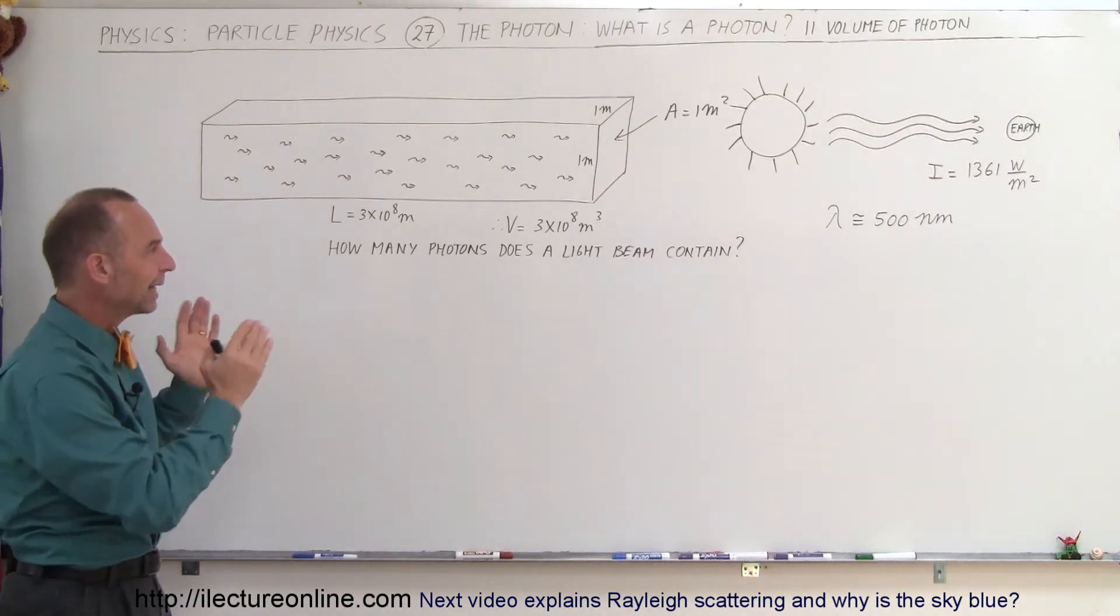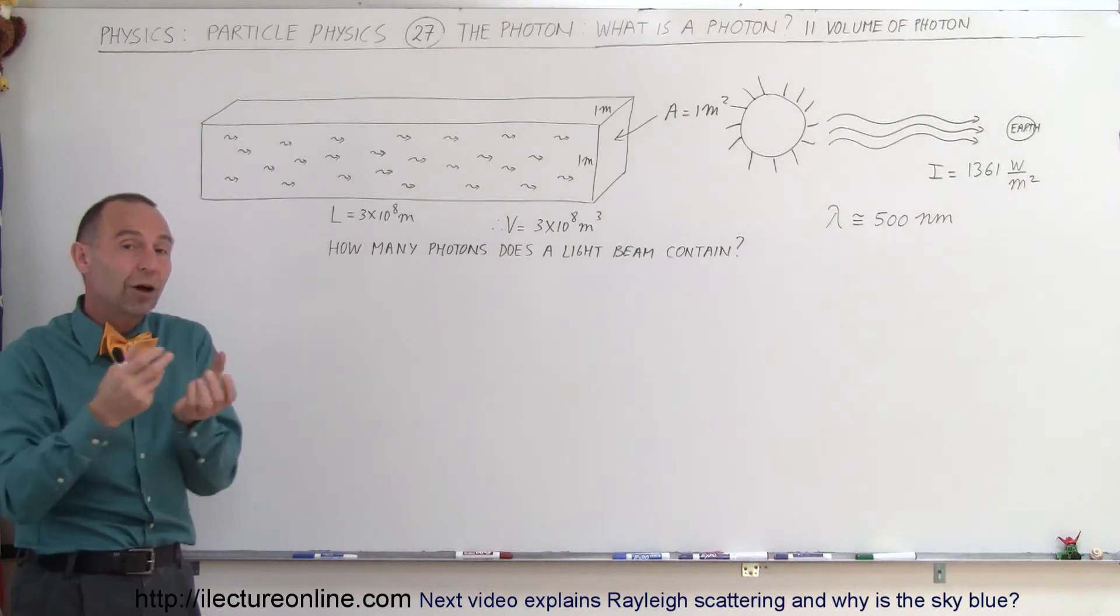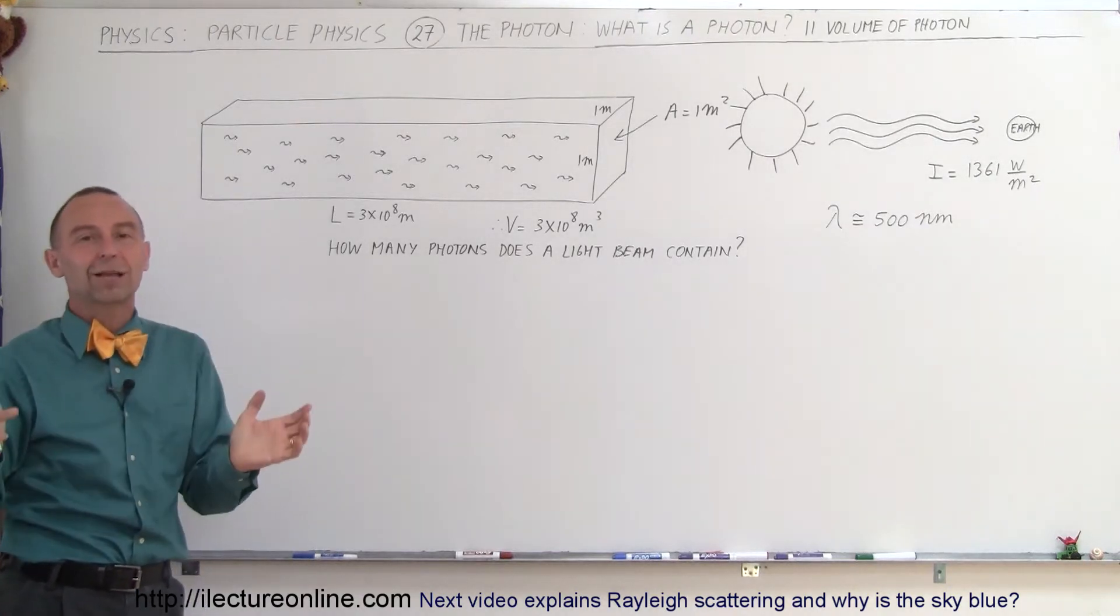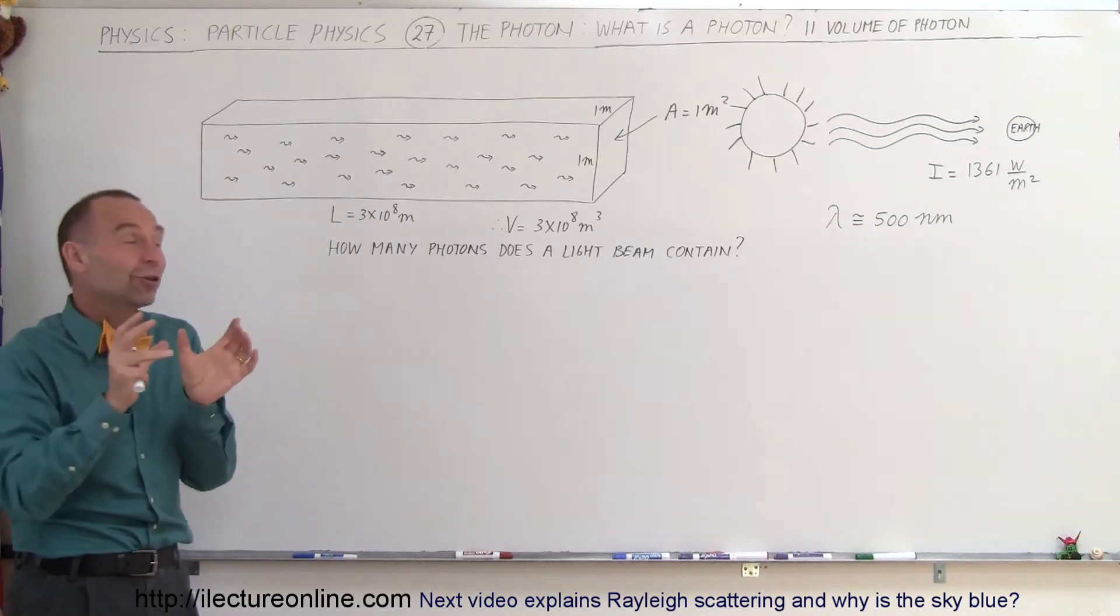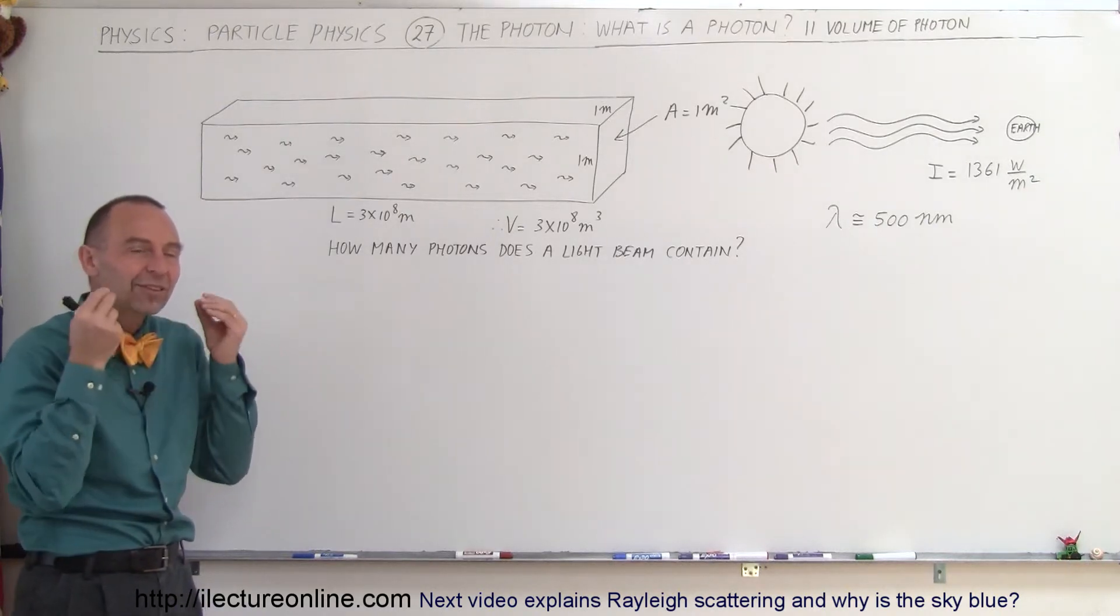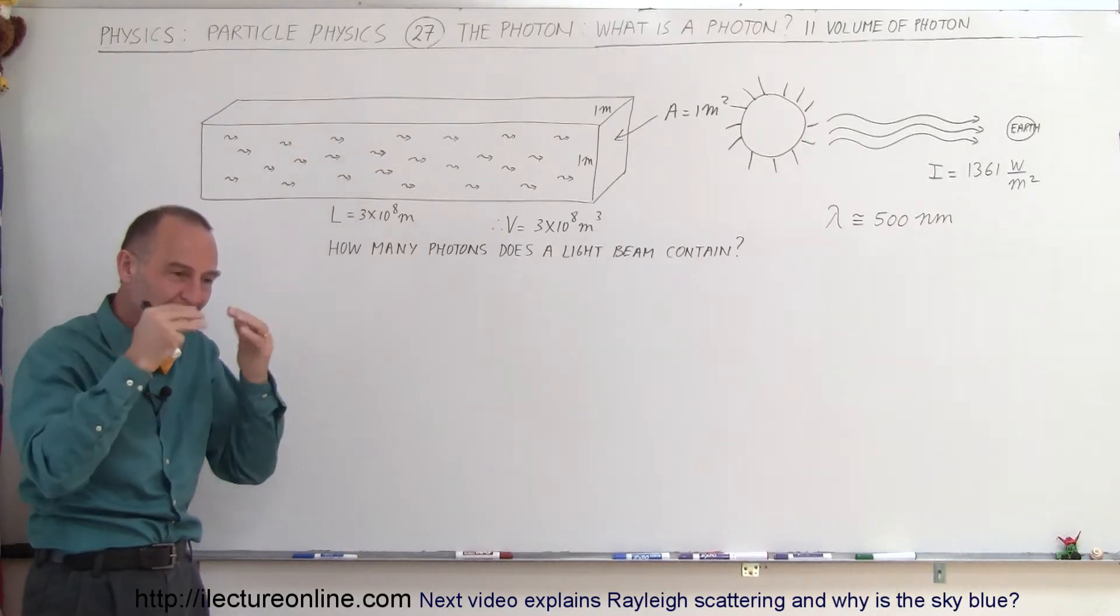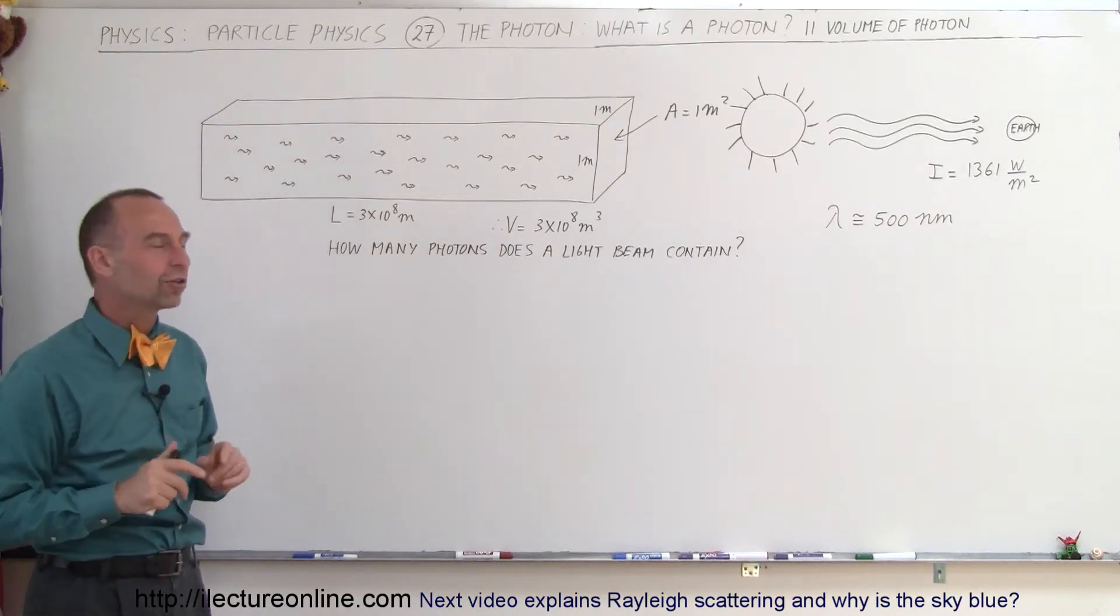How many photons are there in that beam? And then, how much volume, how much space does each photon have within that beam? It's kind of a way to look at it. Of course, that doesn't really mean that photons have volume like that, but it's kind of a concept, and hopefully that will help us figure out what exactly a photon looks like.